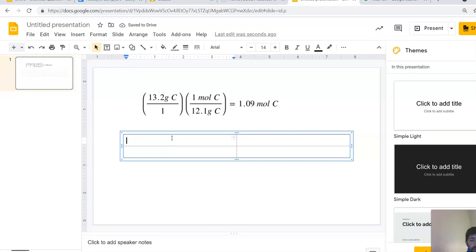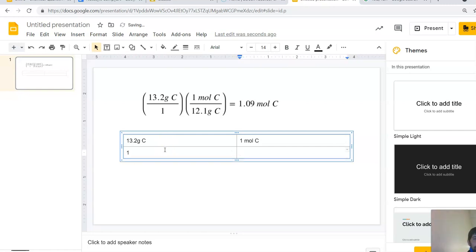Then in here I can write 13.2 grams of carbon and one mole of carbon. Put one on the bottom. So 13.2 grams of carbon over one, times one mole of carbon over 12.1 grams of carbon.